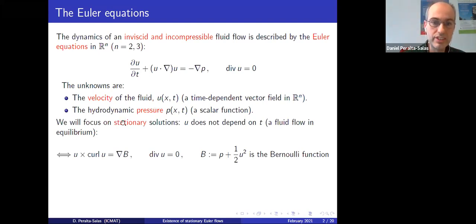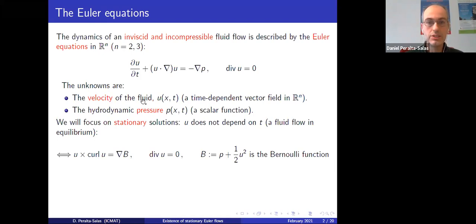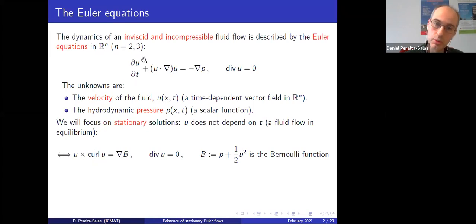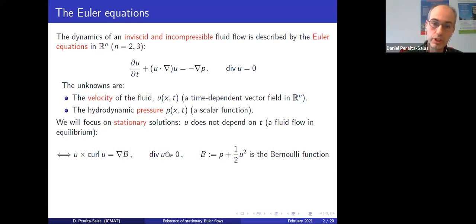In this talk I will focus just on stationary solutions — the simplest case, solutions that don't depend on time. This models a fluid flow in equilibrium. The equations become: divergence of u equals zero, and u·∇u equals minus the gradient of p. There is a totally equivalent formulation in terms of the Bernoulli function: the vector product of u and the curl of u equals the gradient of this Bernoulli function, where the Bernoulli function is defined as pressure plus one half of |u| squared.